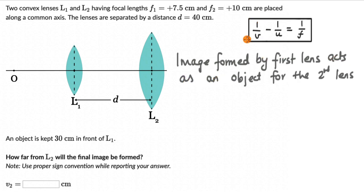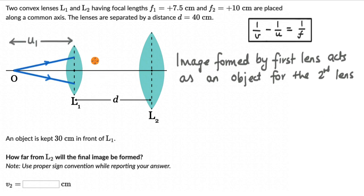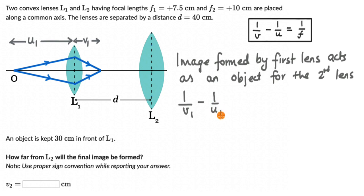We'll use the lens relation first to find the image distance for L1, then use it again to find the image distance for L2. There is an object in front of L1 with object distance U1. Rays pass through the convex lens, undergo refraction, and converge to form an image at distance V1. We know U1 and F1, so: 1/V1 minus 1/U1 equals 1/F1. Plugging in values: 1/V1 equals 1/30 plus 1/7.5.